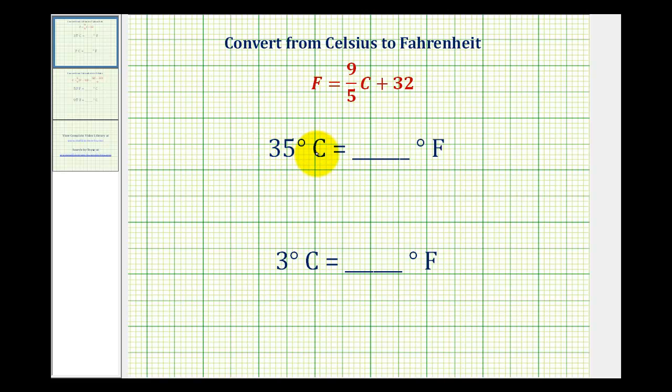So to convert 35 degrees Celsius to Fahrenheit, we'll substitute 35 for C, and then determine F.